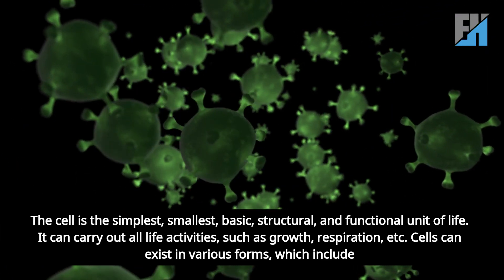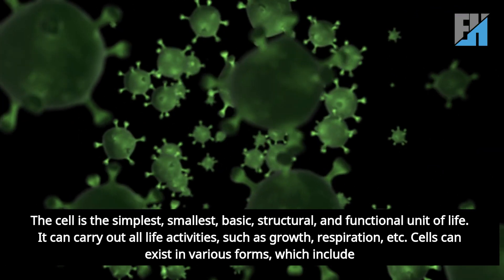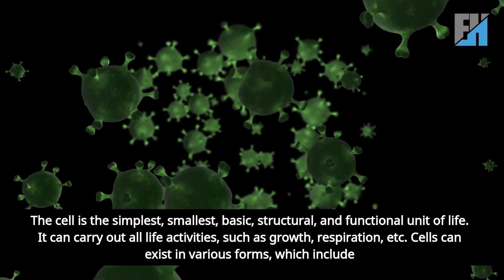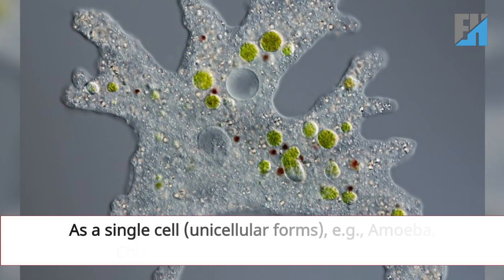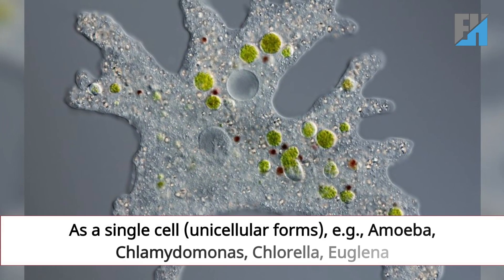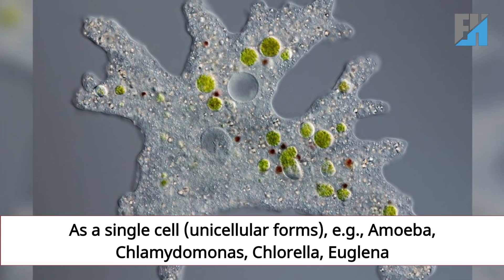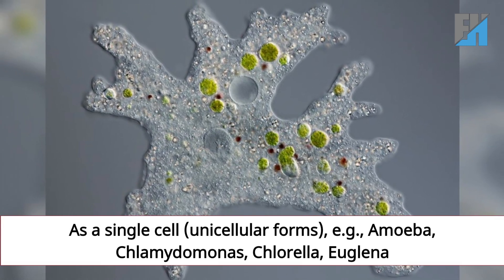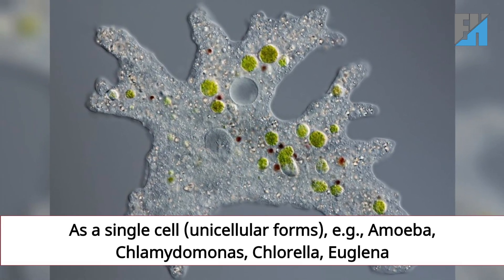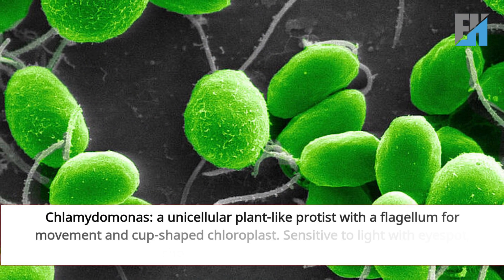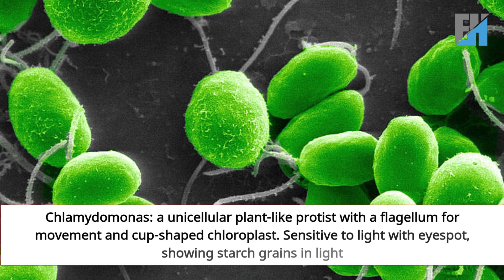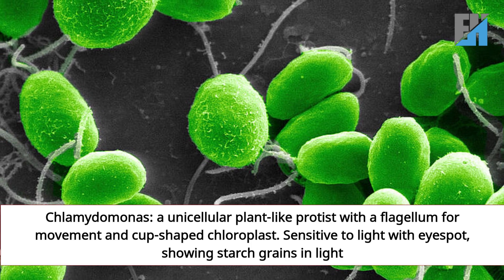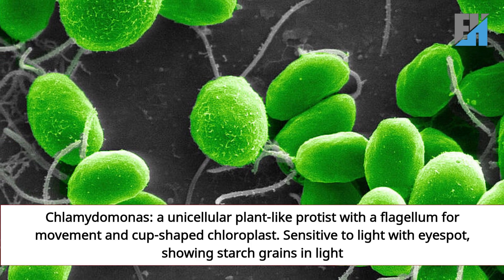Cells can exist in various forms. These include unicellular forms, for example: Amoeba, Chlamydomonas, Chlorella, and Euglena. Chlamydomonas is a unicellular plant-like protist with a flagellum for movement and a cup-shaped chloroplast that is sensitive to light.